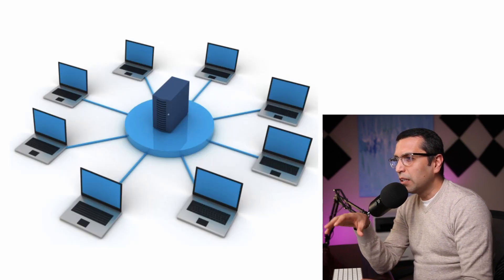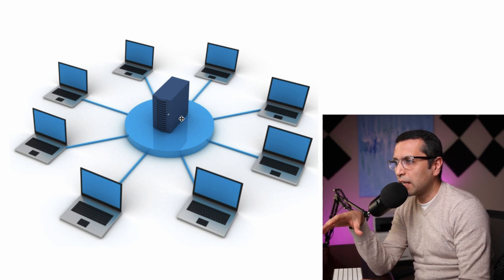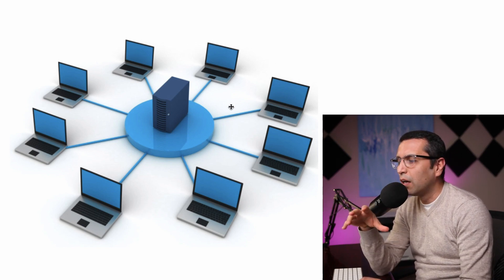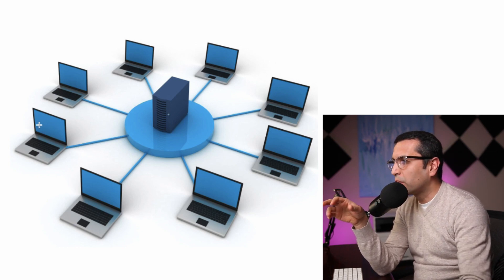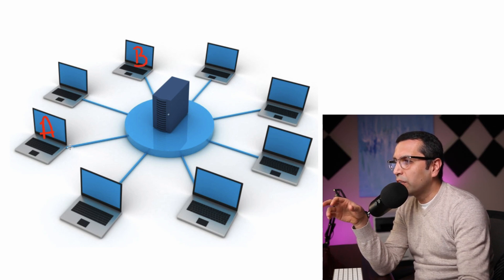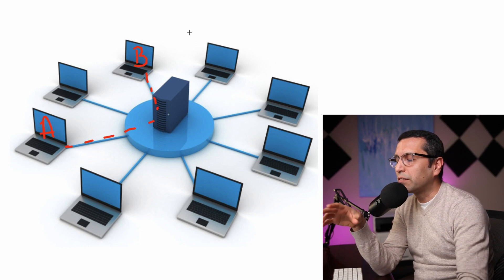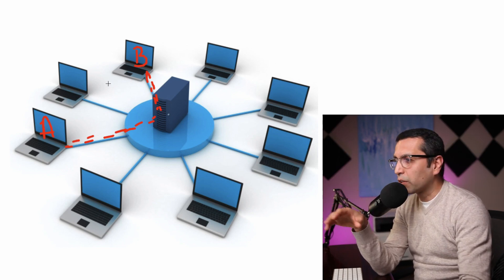In more complicated networks, I have more than two computers and they are all connected to a central point. This central point can be a switch, a hub, an access point, or whatever it may be. So let's imagine computer A wants to communicate with computer B — it sends the data to the switch, and the switch forwards it to B. Inversely, if B wants to send a package, B sends it to the switch and the switch forwards it to A. That is how the network works.